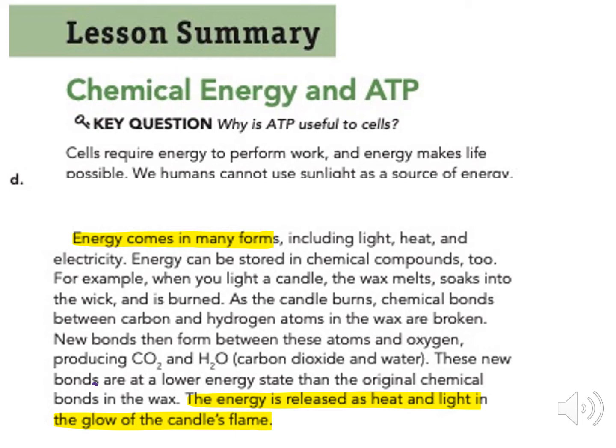For example, when you light a candle, the wax melts, soaks into the wick, and is burned. As the candle burns, chemical bonds between carbon and hydrogen atoms in the wax are broken. New bonds then form between these atoms and oxygen, producing carbon dioxide and water.